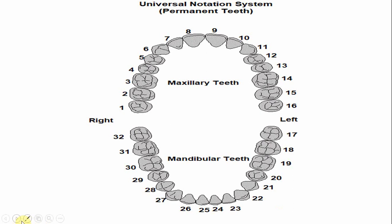In the universal numbering system, the number of the right maxillary second molar is 2, while for the left maxillary second molar the number is 15. The numbering begins with the third molar as number 1 and continues in a clockwise direction.